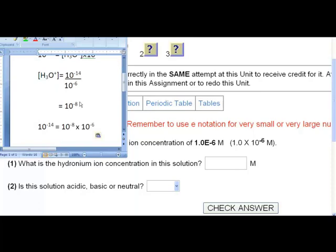As a check, we can multiply 10⁻⁸ times 10⁻⁶ and realize that we get 10⁻¹⁴ back, which is good.